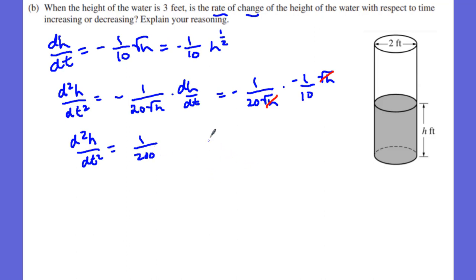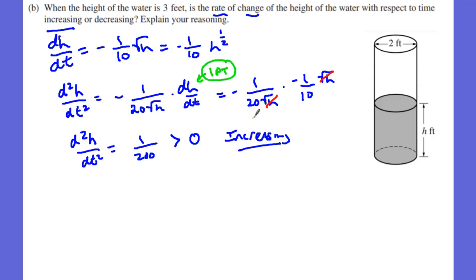The result is 1/200, which is greater than zero. Since the second derivative is positive, the rate of change of height is increasing with respect to time — that's our first derivative test explanation. Part B is worth three points: one point for finding the derivative expression, one point for substituting dH/dT, and one point for the correct answer with explanation.